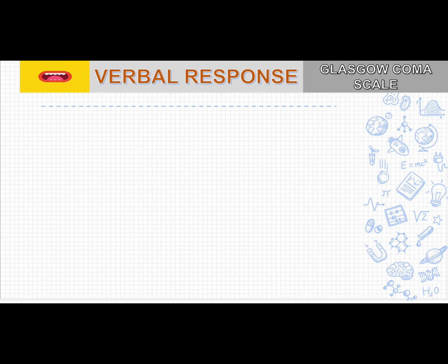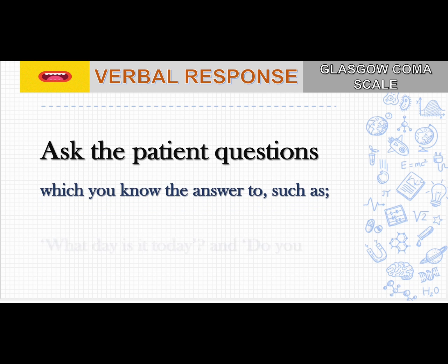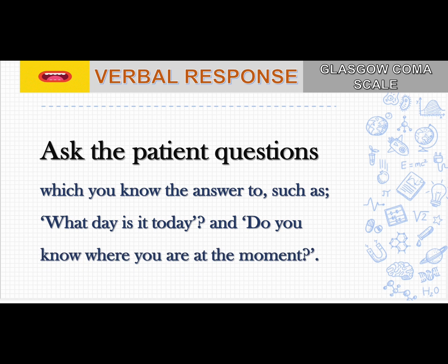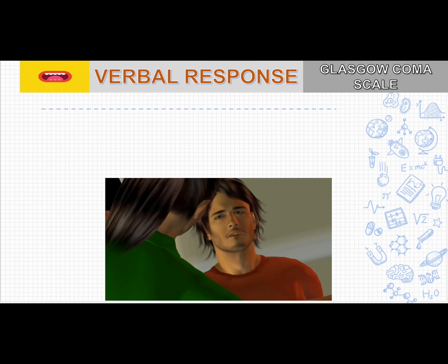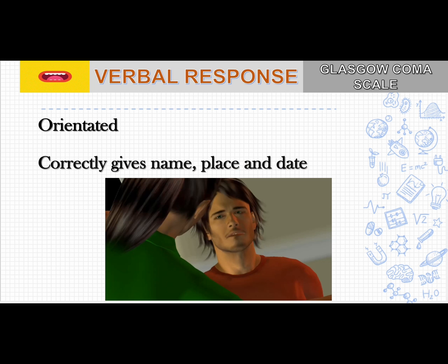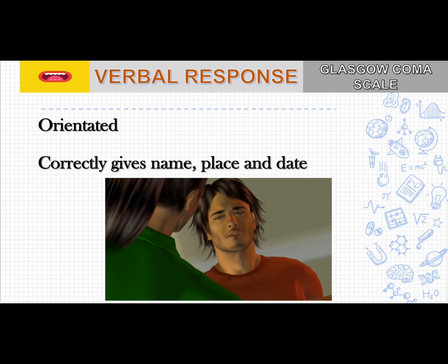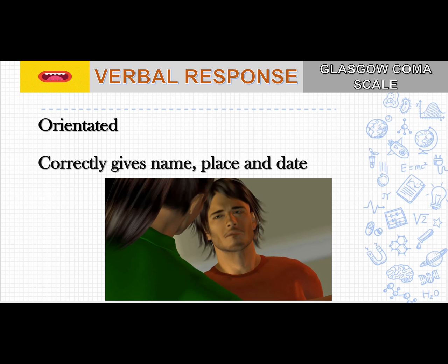For verbal response, you ask questions the patient should know the answers to — such as what day is today and do you know where you are at the moment. You assess time, place, and person. If the patient is oriented and answers correctly to name, place, and date, you give a score of 5. For example: 'Can you tell me where you are?' — 'At Southampton General Hospital.' 'Can you tell me what year it is?' — 'It's 2009.'